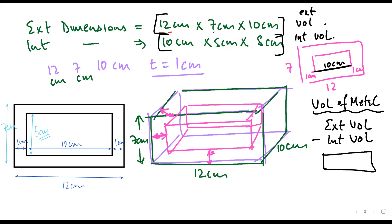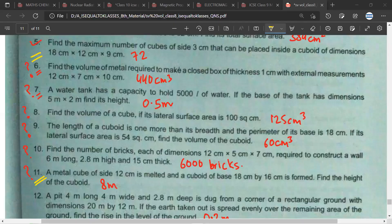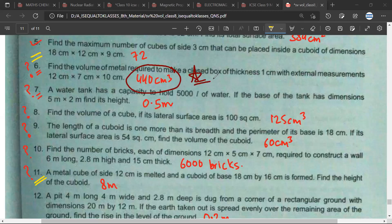12×7×10 = 840 cubic centimeter, minus 10×5×8 = 400 cubic centimeter. So the answer is 440 cubic centimeter. All these questions we discussed — try to do them again as homework.